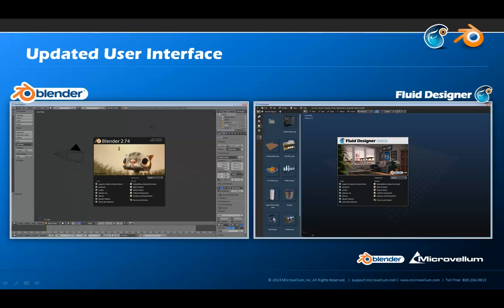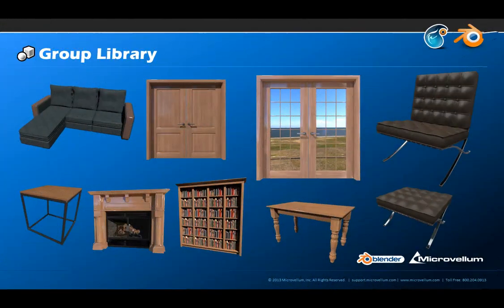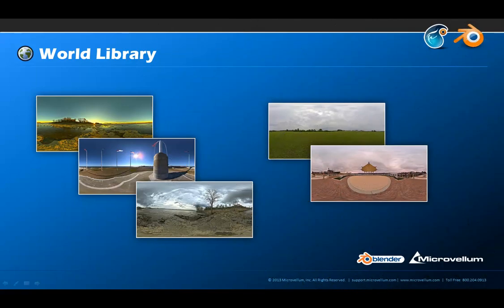By default, Fluid Designer comes with four library add-ons. We have the Object Library, which allows you to maintain a library of objects that can be quickly dragged into the scene. We have the Group Library, which allows you to maintain a library of groups made up of several objects combined together to create complex parametric assets. We have the Material Library, which allows you to drag and drop materials onto objects within the scene. And we have the World Library, which allows you to maintain a library of environments that help light the scene and provide a realistic backdrop.